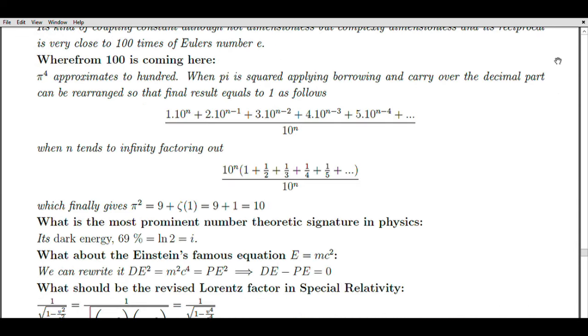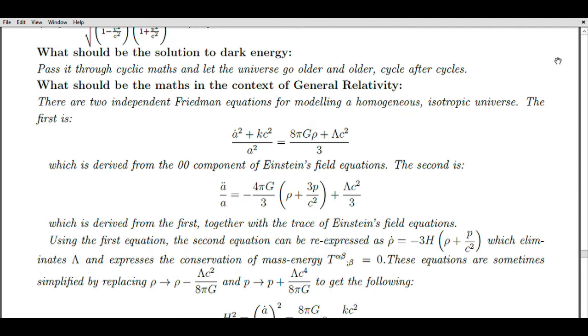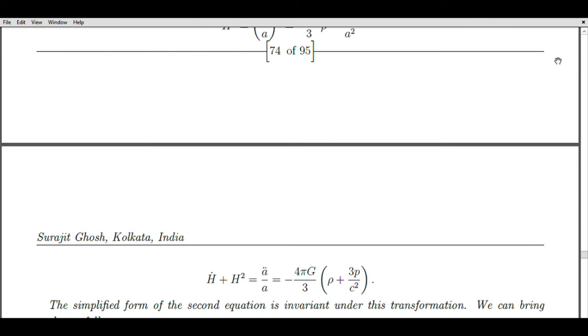The unification of real and imaginary numbers would foster interdisciplinary collaborations and cross-pollination of ideas across all branches of science. This integration could have implications for fields such as chemistry, biology, material science, and more, by providing enhanced mathematical tools for modeling and simulating intricate systems.